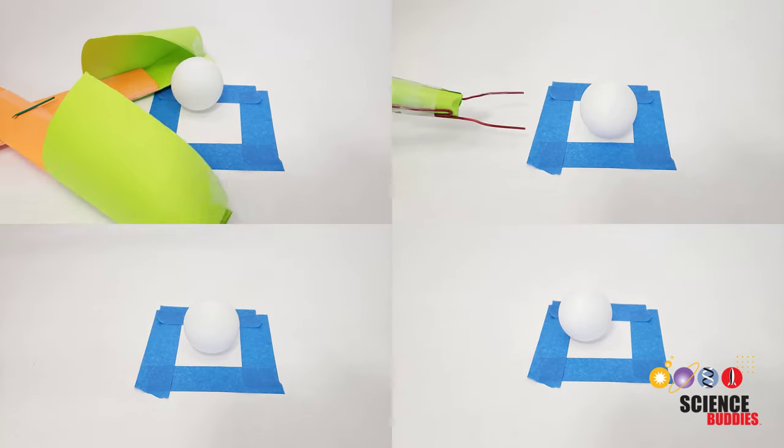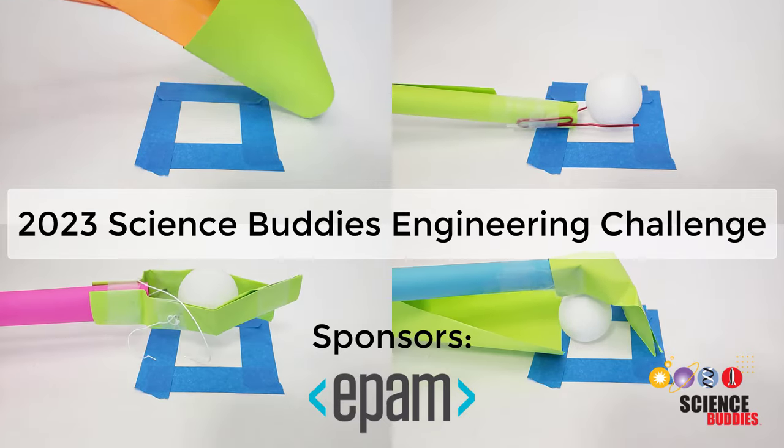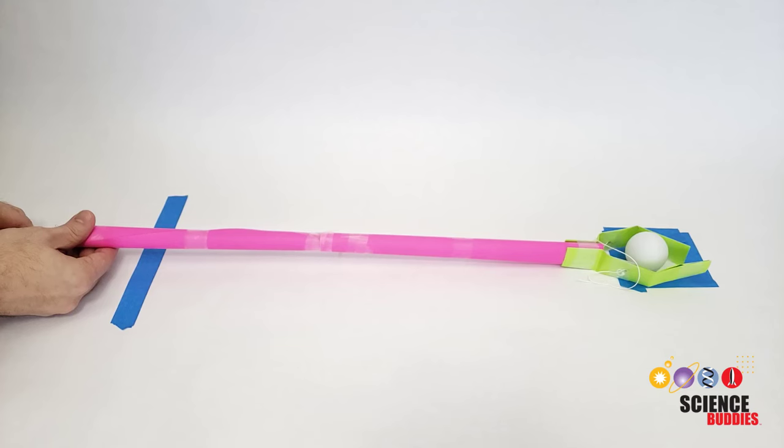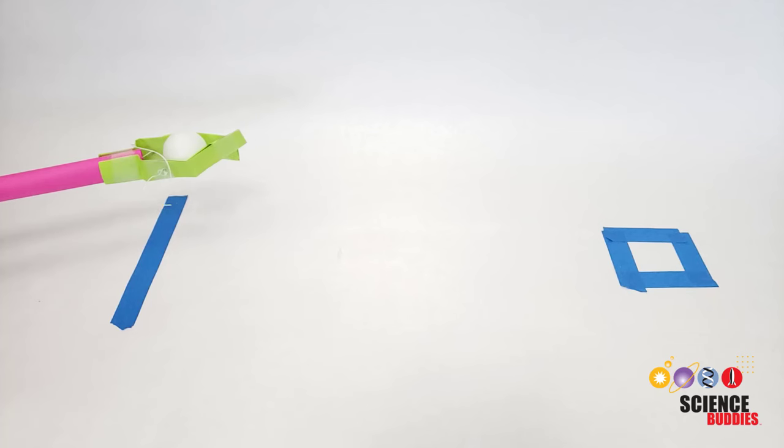This video is an introduction to the 2023 Science Buddies Engineering Challenge. The goal of this year's challenge is to build a device that can pick up a ping pong ball from a distance and bring it back over a starting line. The farther away the ball is, and the fewer materials you use, the higher your score.